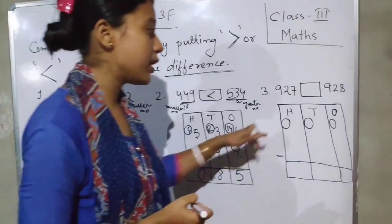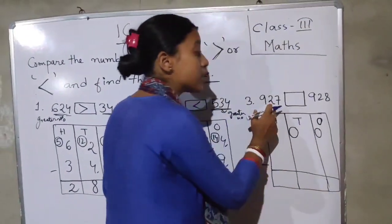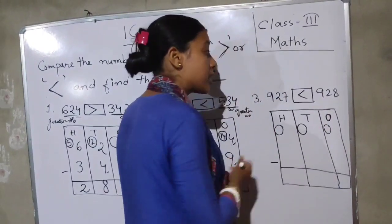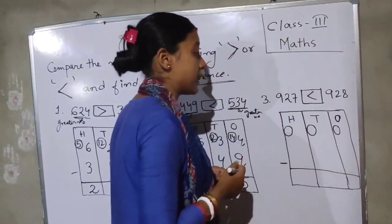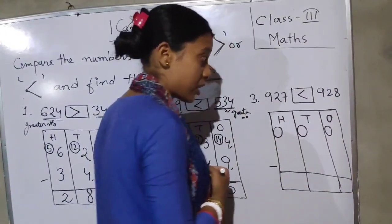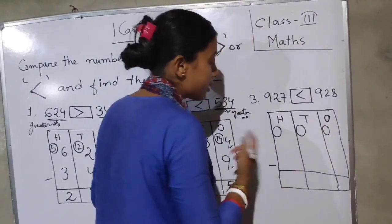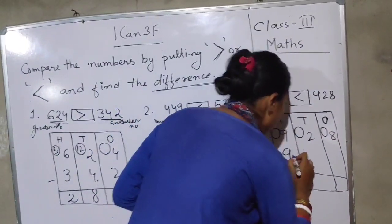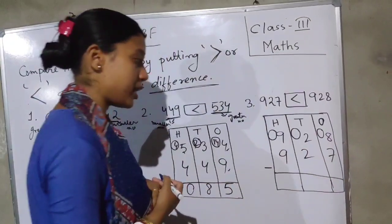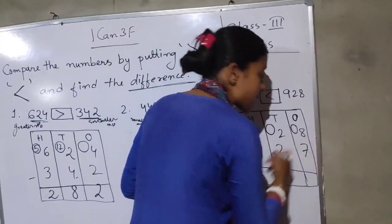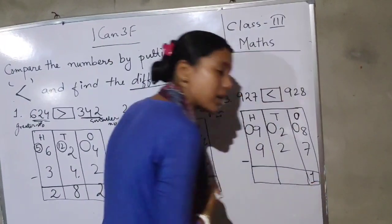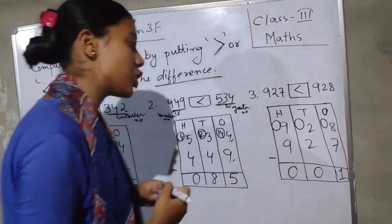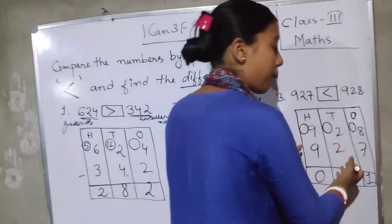Same here. Which one is bigger: 927 or 928? 928 is greater because 927 comes before 928. So we subtract the smaller from the greater: 928 minus 927. 8 minus 7 is 1, 2 minus 2 is 0, and 9 minus 9 is 0. No regrouping needed here — we can do it directly.